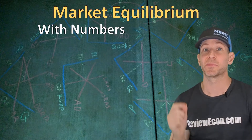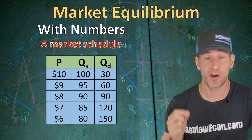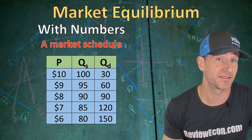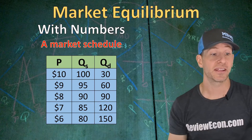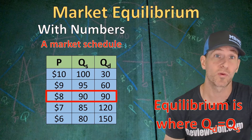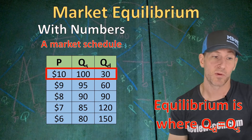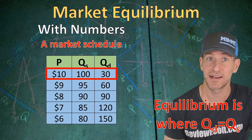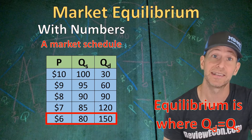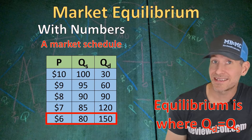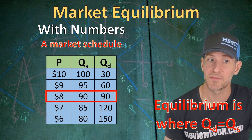We can also find market equilibrium with numbers instead of a graph. On your exam you could see a market schedule — that's where we have price with all the different quantities supplied and demanded for those prices; it's a combination of a demand schedule and a supply schedule on the same table. Just like with a graph, the equilibrium is found at the price where quantity supplied equals quantity demanded. In this case that's at $8. If price is higher than equilibrium we have a surplus; if price is below equilibrium we have a shortage. The equilibrium price is $8 and the equilibrium quantity is 90.